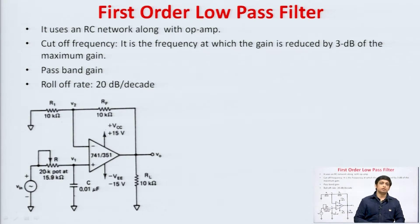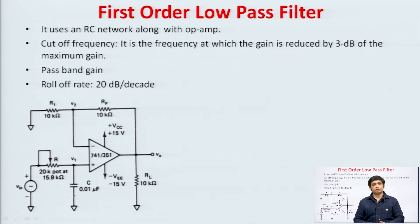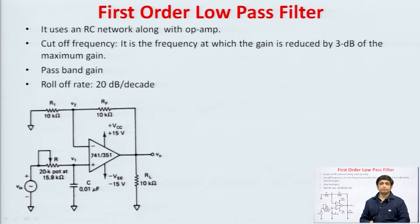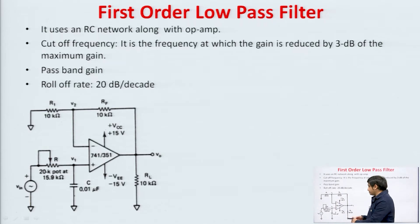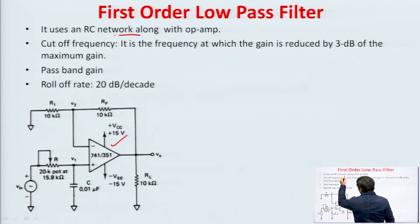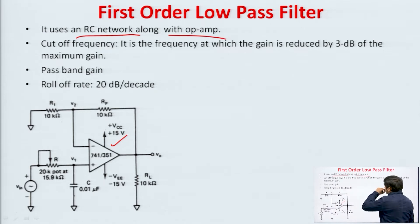Starting with the first order low pass filter. As I had already discussed in the previous class, this low pass filter passes the low frequency signals and attenuates the high frequency signals. Since we are studying only active filters, active filters means along with the active element we will be using some resistors and capacitor. We are using an op amp here as an active element. This active low pass filter basically consists of an RC network along with the op amp.